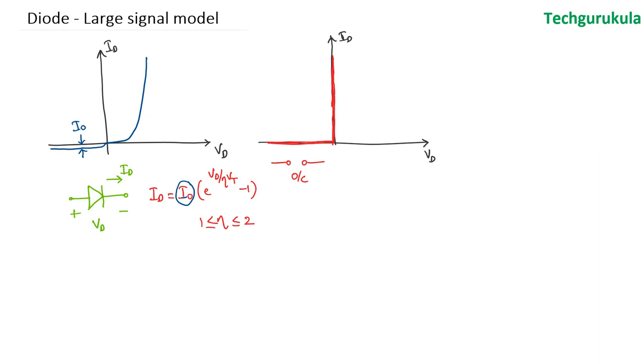When we forward bias the diode it allows any amount of current to flow through. So we can say that the IV characteristics of this model of the diode would be like this. In forward bias the diode would be like a short circuit.